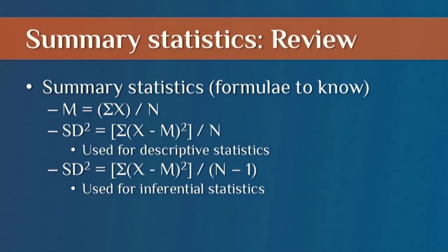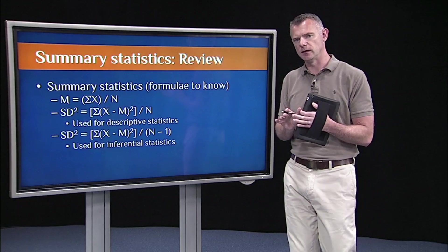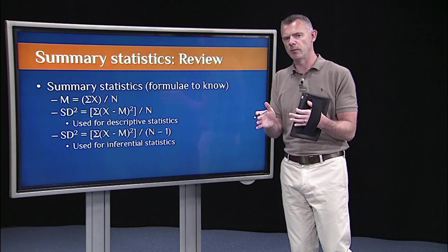The mean is just the sum of all the scores divided by the number of scores. And then I gave you this one formula for standard deviation and variance. This first one is used for descriptive statistics. And that's still all we're dealing with is descriptive statistics. We're just describing what's going on in a sample.